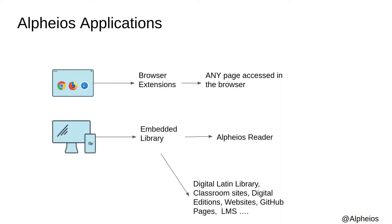We also provide a JavaScript library, which can be embedded directly in a website or application. This allows for site-specific customizations of the Alpheus interface and full support for use on mobile devices. We use this library in our own reader environment. It is also used in the Digital Latin Library, among other sites, and can be easily added to classroom sites, online digital editions, websites, GitHub pages, learning management systems, and so forth.